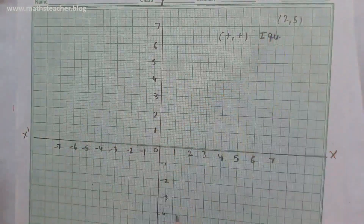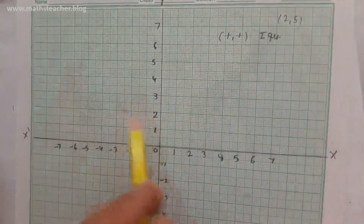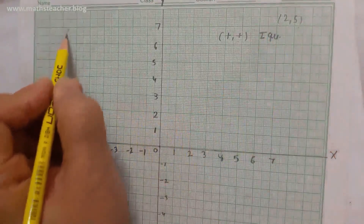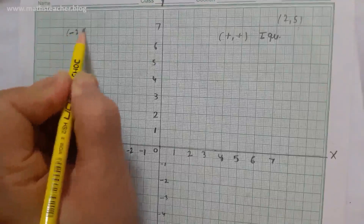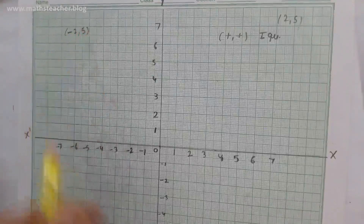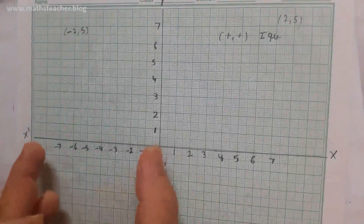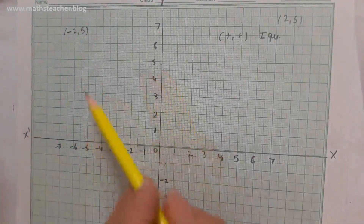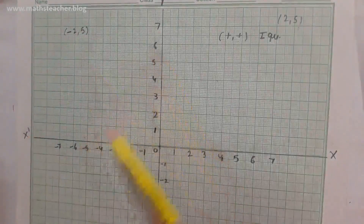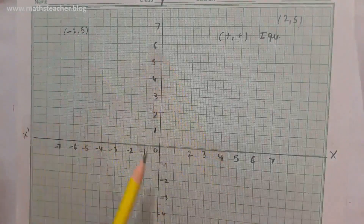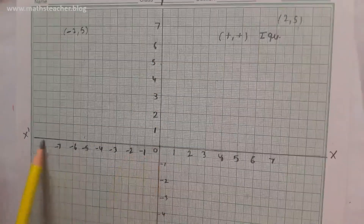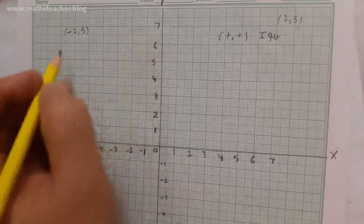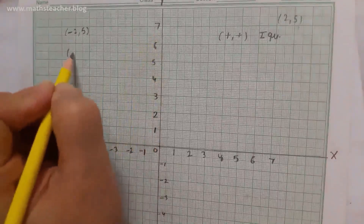If you are given a coordinate like (-2, 5), this means what is happening here? The x-axis side is negative and the y-axis is positive. So the x coordinate is negative. We call this the second quadrant.